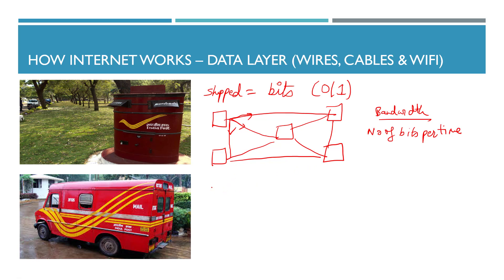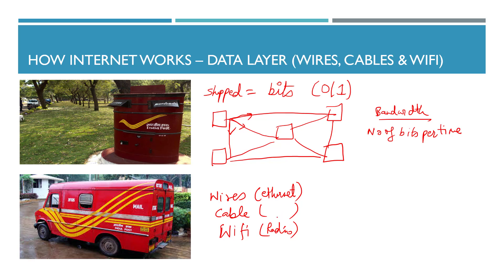How are bits physically transferred? There are three ways: first, through wires — like ethernet cables you see in homes and offices. Second, through cables — specifically fiber optic cables, which are threads of glass engineered to reflect light, since light travels very fast. Third, through Wi-Fi — which stands for Wireless Fidelity, and uses radio signals to transfer information. So the three mediums are electricity (wire), light (fiber optic cable), and radio waves (Wi-Fi).